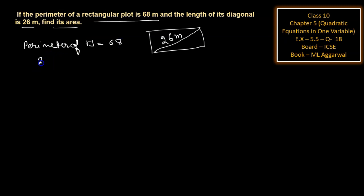The perimeter of a rectangle equals 68. Using the formula 2(L+B)=68, we get L+B=34, so length L equals 34 minus B.